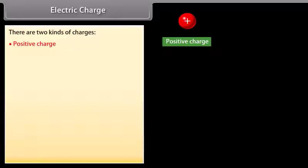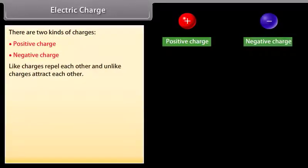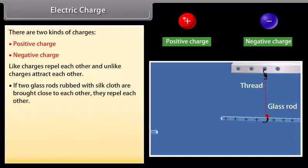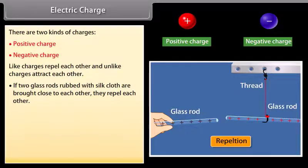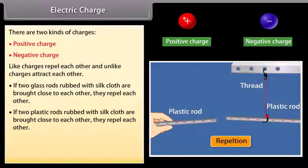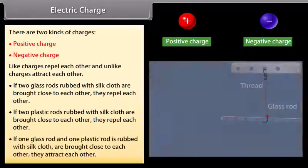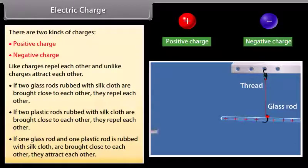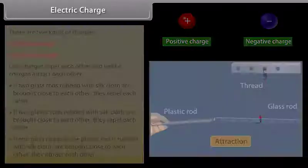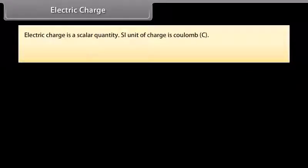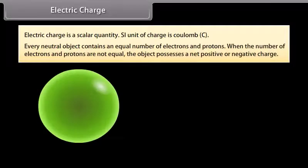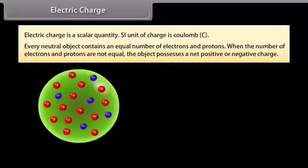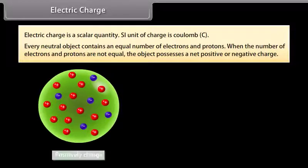Electric charge: There are two kinds of charges — positive charge and negative charge. Like charges repel each other and unlike charges attract each other. If two glass rods rubbed with silk cloth are brought close to each other, they repel. If one glass rod and one plastic rod rubbed with silk cloth are brought close to each other, they attract. Electric charge is a scalar quantity; its SI unit is coulomb. Every neutral object contains an equal number of electrons and protons. When these numbers are not equal, the object possesses a net positive or negative charge.